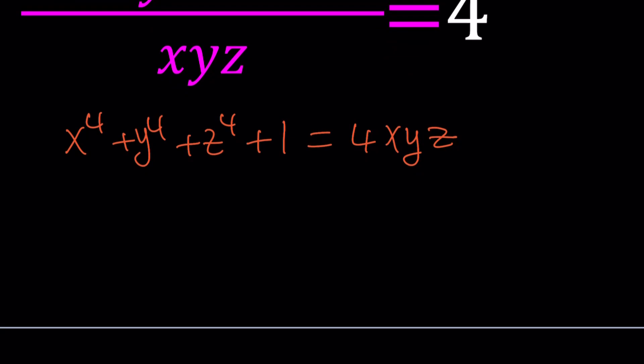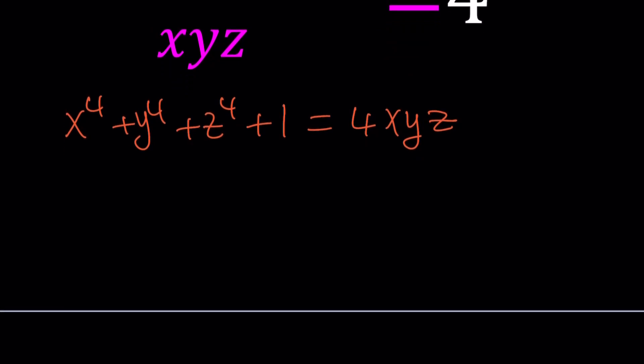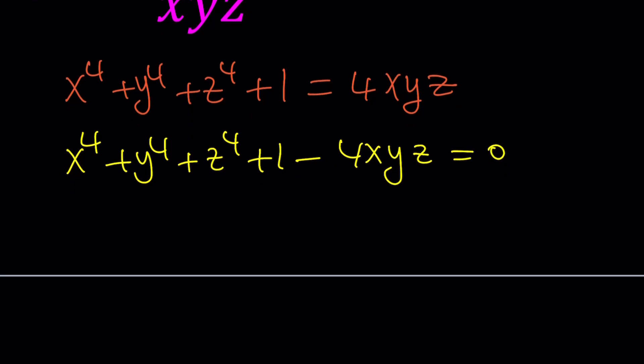Let's go ahead and manipulate this a little bit to get what we want. First, I'm going to put everything on the same side. x to the 4th plus y to the 4th plus z to the 4th plus 1 minus 4xyz equals 0. That's the first rule. And then the second step is try to get perfect squares out of this. But of course, you're going to need to manipulate this a little bit, add, subtract, whatever, to get something nicer.